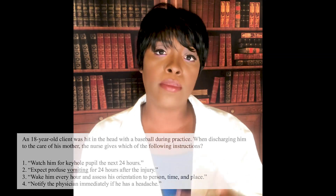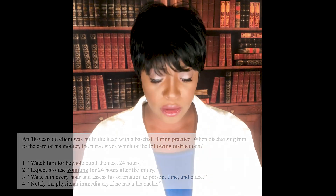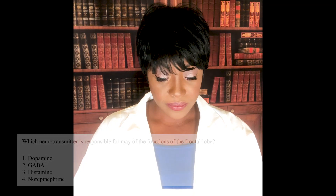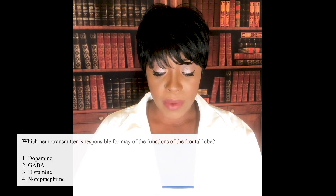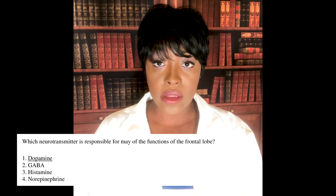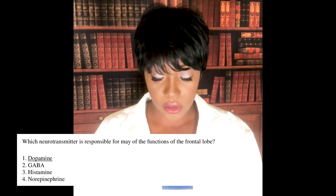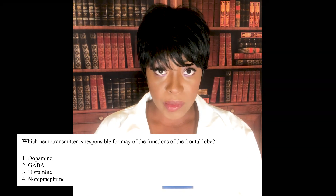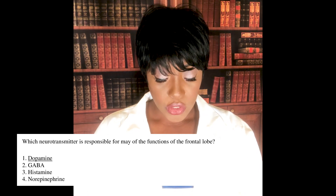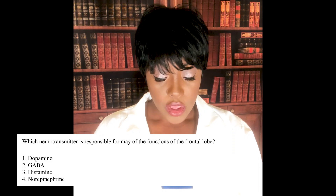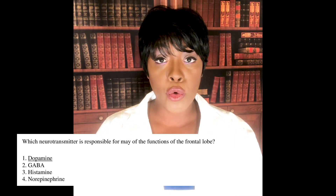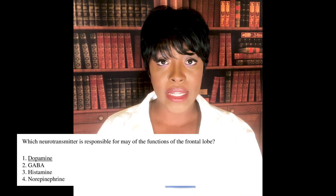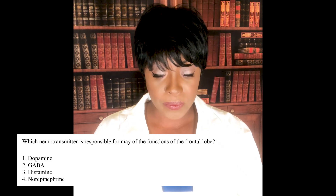Next question: which neurotransmitter is responsible for many of the functions of the frontal lobe? One: dopamine. Two: GABA. Three: histamine. Or four: norepinephrine.